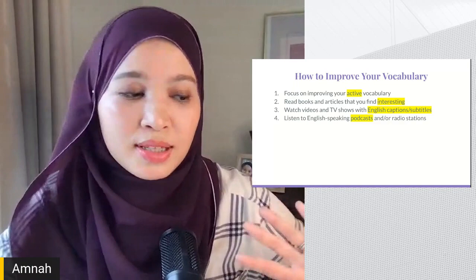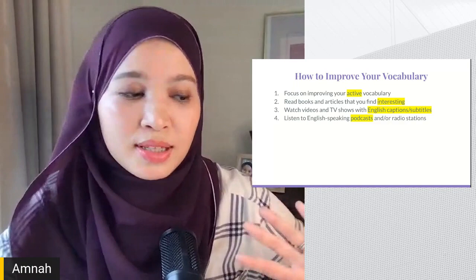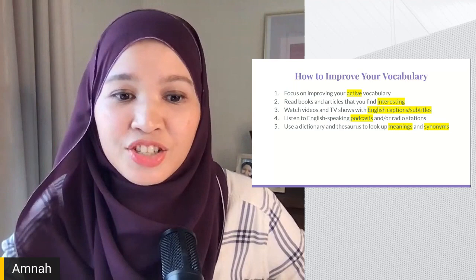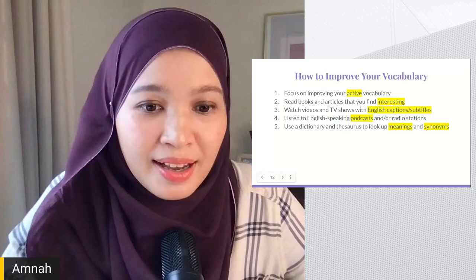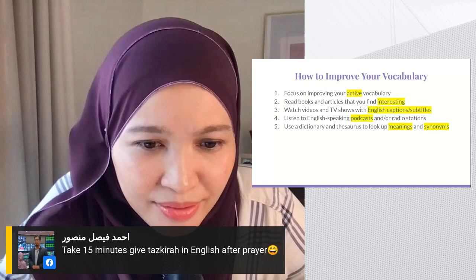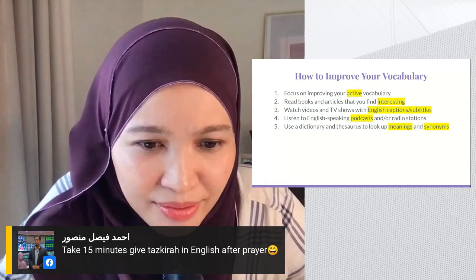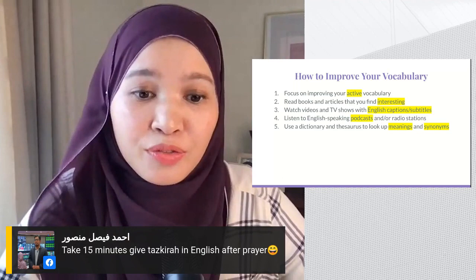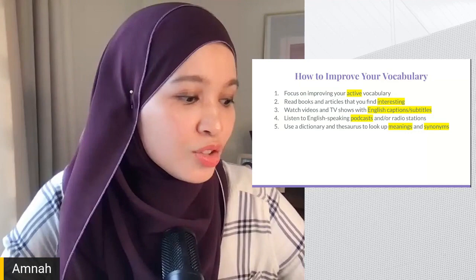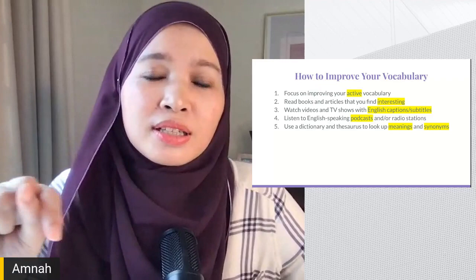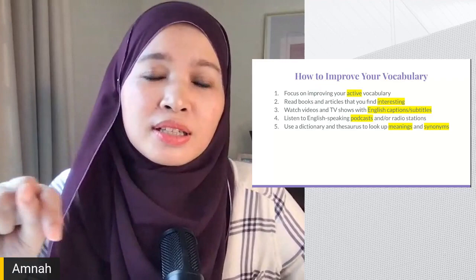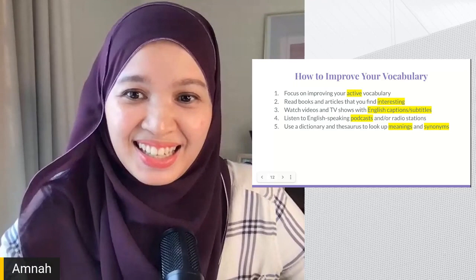Number four — listen to English-speaking podcasts and/or radio stations; download an app on your phone and start with something you're interested in. Number five — use a dictionary and thesaurus to look up meanings, synonyms, and antonyms. Number six — keep a vocabulary journal; write down new words, their meanings, synonyms, and example sentences so the act of writing helps you remember them better.